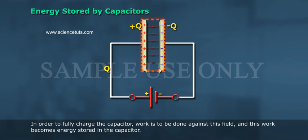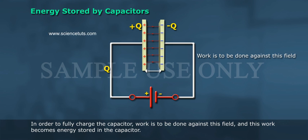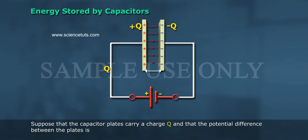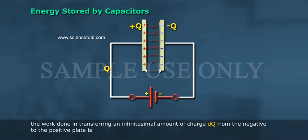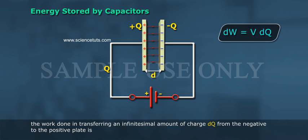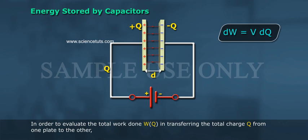In order to fully charge the capacitor, work is to be done against this field, and this work becomes energy stored in the capacitor. Suppose that the capacitor plates carry a charge Q and that the potential difference between the plates is V. The work done in transferring an infinitesimal amount of charge dQ from the negative to the positive plate is simply dW = V·dQ.